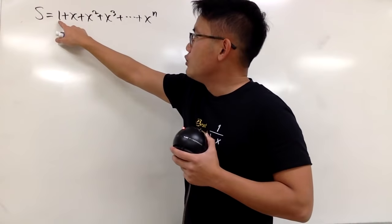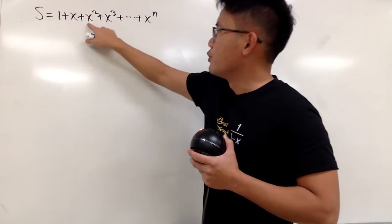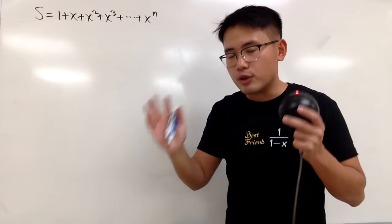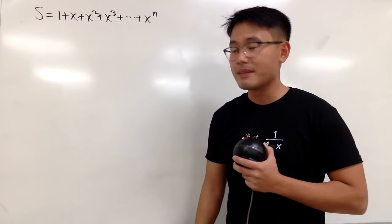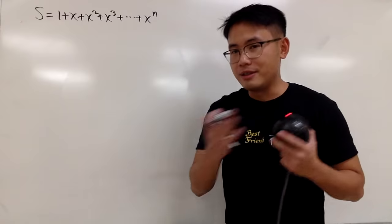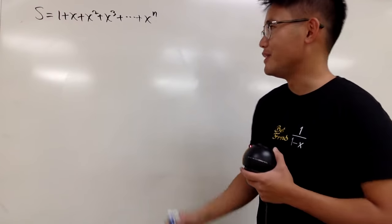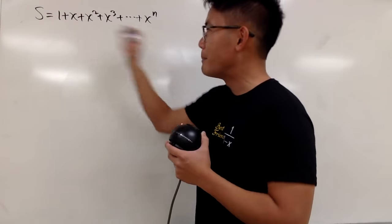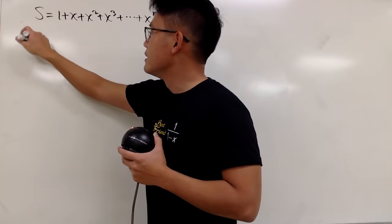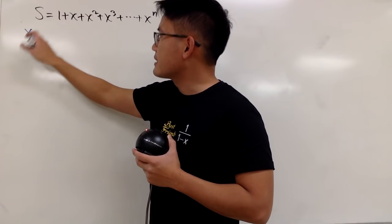Notice that each and every time, we just multiply by x to get to the next term. So this is the finite version of the geometric series. Anyway, we'll pretty much do the similar thing like the best friend video. So we will just multiply both sides by x. So on the left-hand side, I get xS.